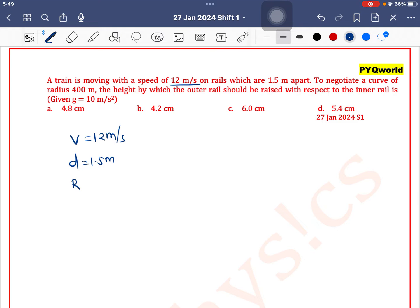To negotiate a curve of radius 400 meters, the height by which the outer rail should be raised with respect to the inner rail is?